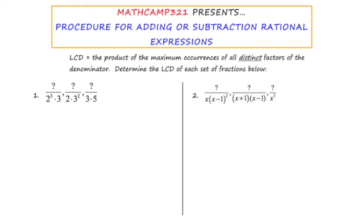Let's start with the definition of what an LCD is. An LCD is the product of the maximum number of occurrences of all distinct factors of the denominator.